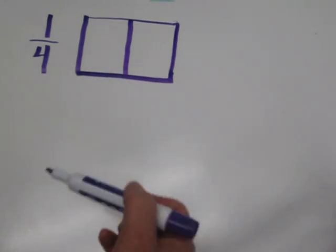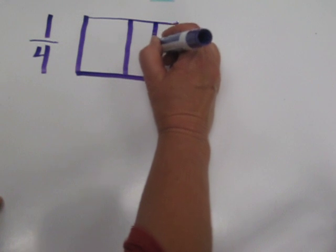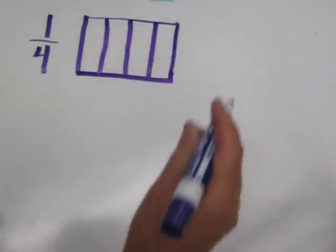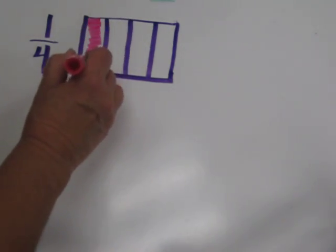Right now I have two parts, and I need four, so I can divide each of those down the middle as best I can, and then shade in one of those four parts. There we have it, voila, one-fourth.